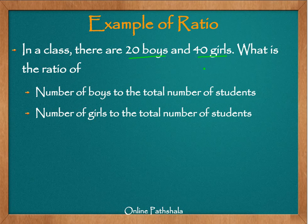What is the ratio of A, the number of boys to the total number of students, and B, the number of girls to the total number of students?